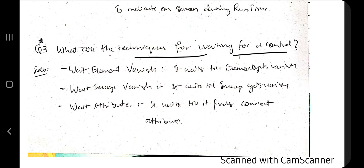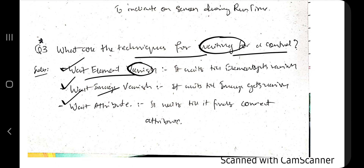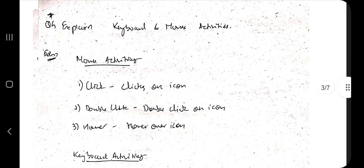The next question is: what are the techniques used for waiting for a control? There are three techniques: Wait Element Vanish, Wait Image Vanish, and Wait Attribute. Wait Element Vanish waits until the element disappears from the screen, then performs an action. Wait Image Vanish does the same for images. Wait Attribute waits for a specific property of the element to be seen.